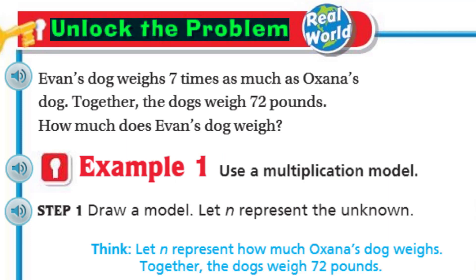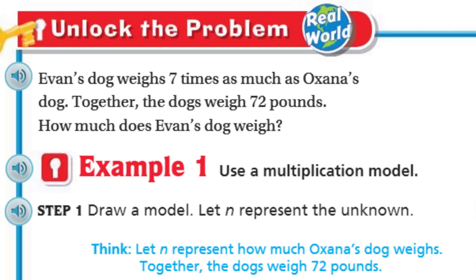That's right, my friends — it's real world, baby. Real world! Now, here it says: Evan's dog weighs seven times as much as Oksana's dog. Together, the dogs weigh 72 pounds. How much does Evan's dog weigh?